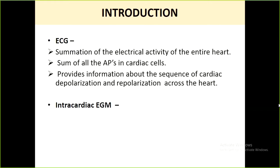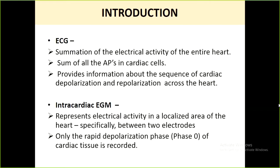In contrast, intracardiac EGMs are recorded by placing catheters inside the heart at specified locations. The electrodes of these catheters record electrical activity from a localized area where they are placed. When you place a catheter at the right atrial appendage or the His bundle location, it records the electrical activity between those two electrodes at the tip — representing the electrical activity in a localized area recorded between two electrodes. Intracardiac electrograms predominantly record the rapid depolarization phase — phase zero — of the cardiac action potential, whereas ECG records both depolarization and repolarization.